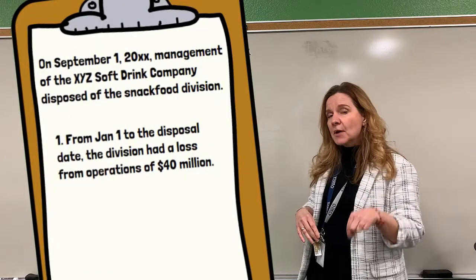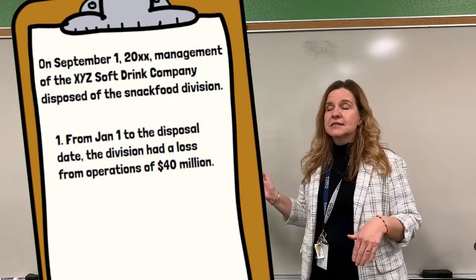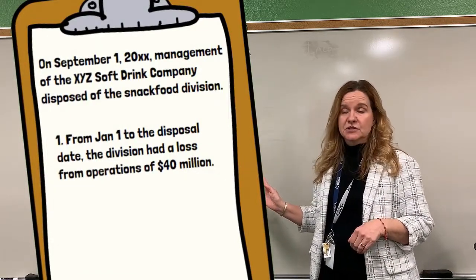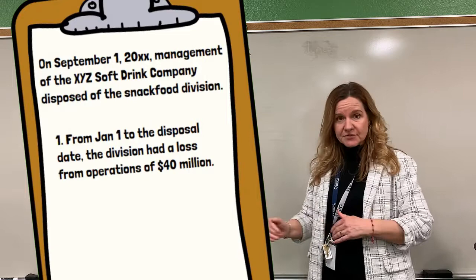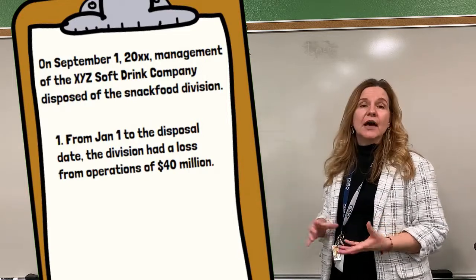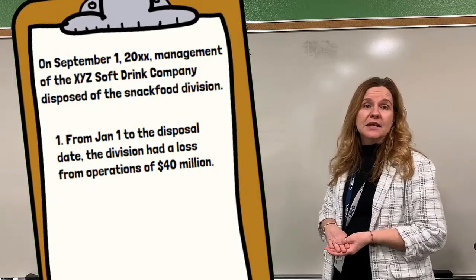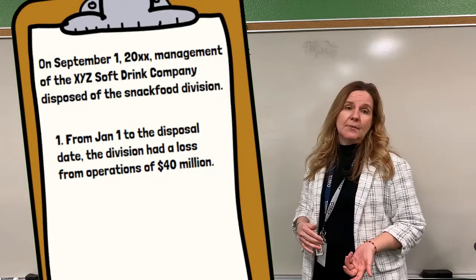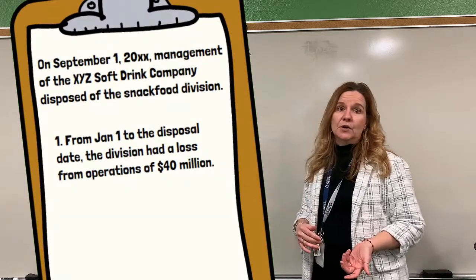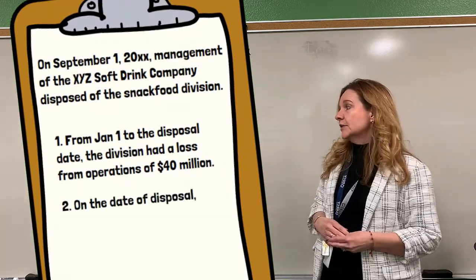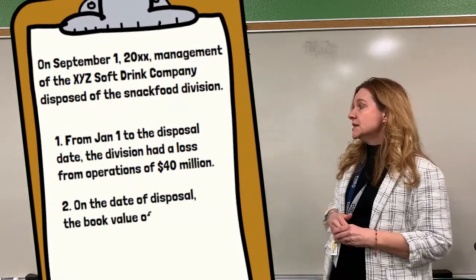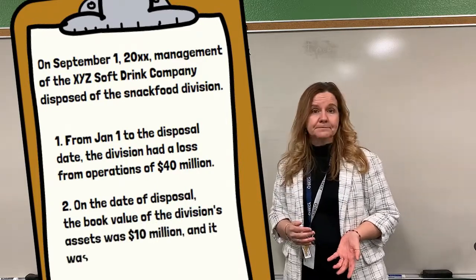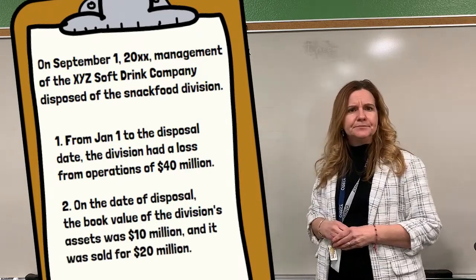On the actual date of disposal — this is an actual sale where they're selling the division off to another company — we look at the book value of the assets of that division and compare it to how much we're selling it for. The book value is $10 million, and we're selling it for $20 million. So as you can see, we have a gain.